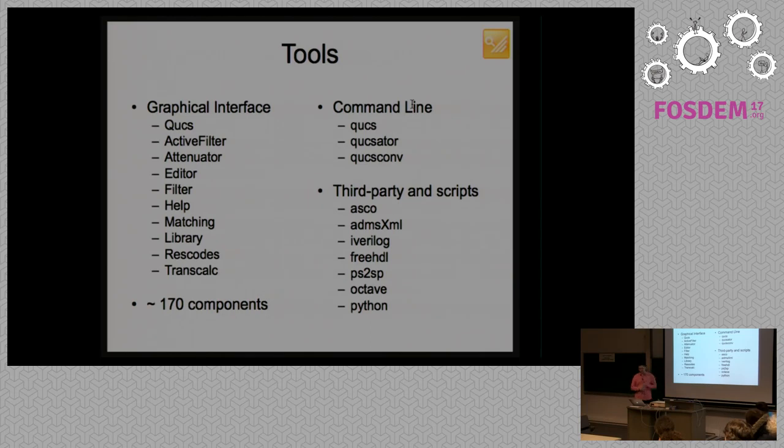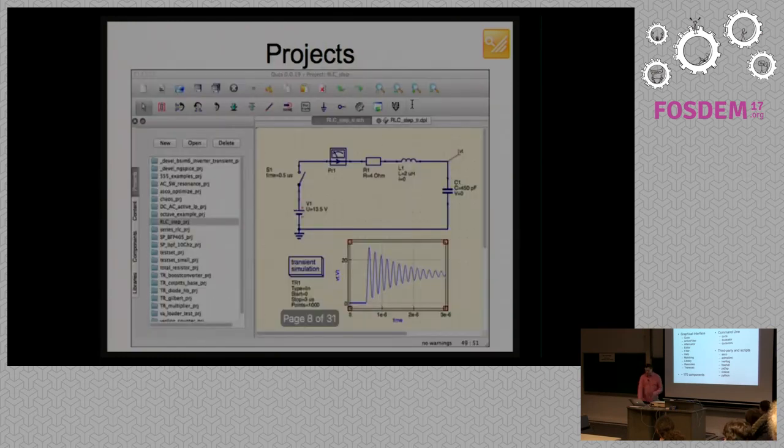And we also interface to third-party tools like ASCO, which is an optimizer. ADMS XML, which does the Verilog A to code or C++ conversion that we need to run the models. We can run from the schematic Verilog, FreeHDL that we are working to replace by GHDL, hopefully for the next release. And there are some conversion tools from PSPICE to SPICE. And then you can also run, there is a dock, where you can run Octave directly from the user interface. And Python is mostly scripts for parsing the data.